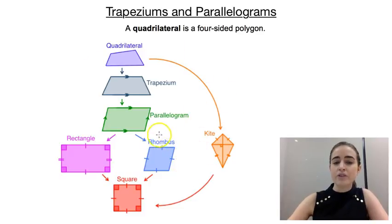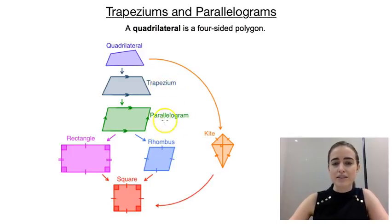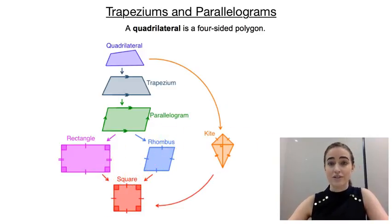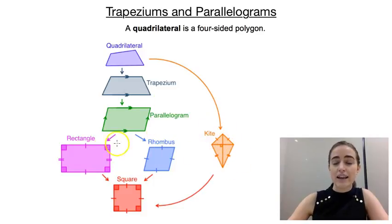What this means is that if we look, for example, at a rhombus — a rhombus has all the properties of a parallelogram and a trapezium as well, plus some of its own. So technically, any rhombus is also a parallelogram and a trapezium, but a parallelogram or a trapezium isn't necessarily a rhombus. A square is technically everything else as well — it's just a special type of rectangle or a special type of rhombus. But none of the others would be squares. And a kite is off here on its own because it doesn't fall into any of the other categories.